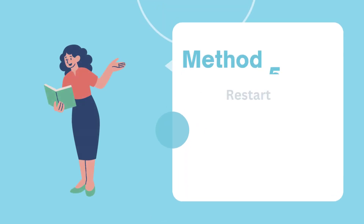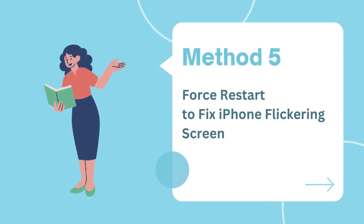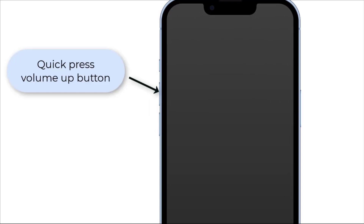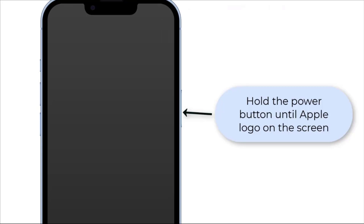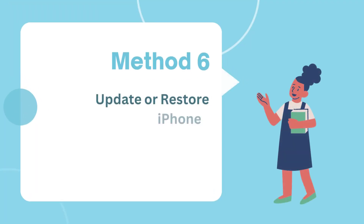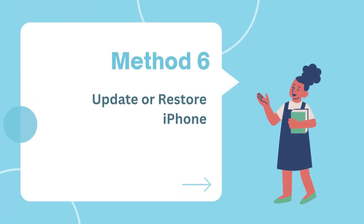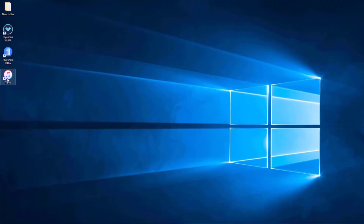Method 5: Force restart to fix iPhone flickering screen. To force restart your iPhone, press the Volume Up button and release it quickly, then press the Volume Down button and release it quickly, then hold the Power button until you see the Apple logo on the screen.